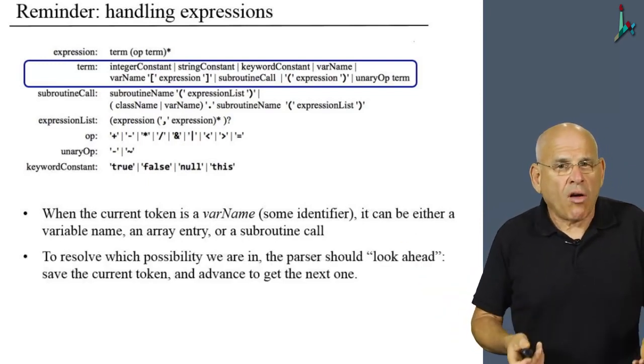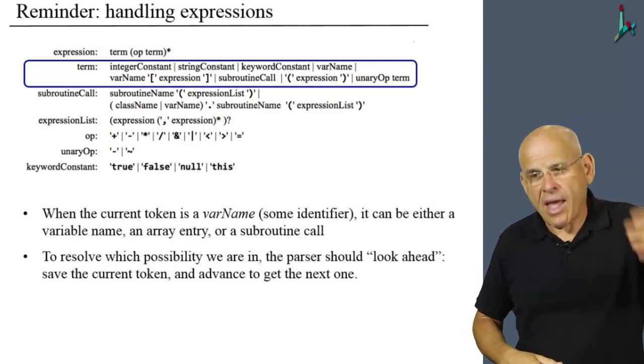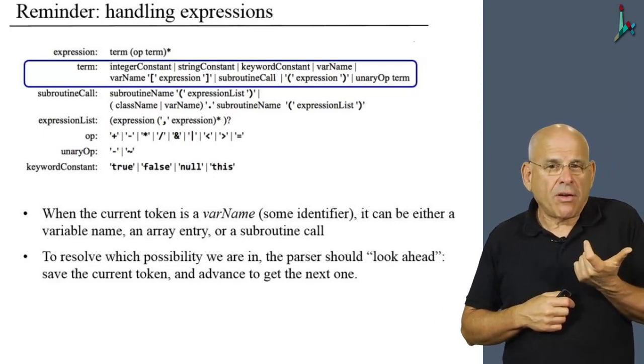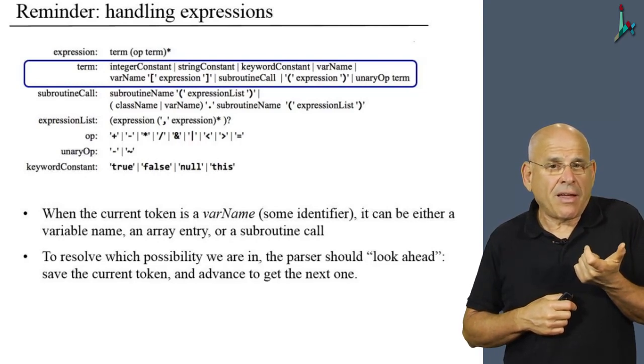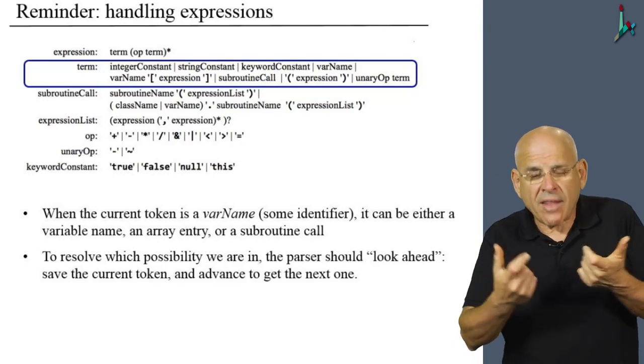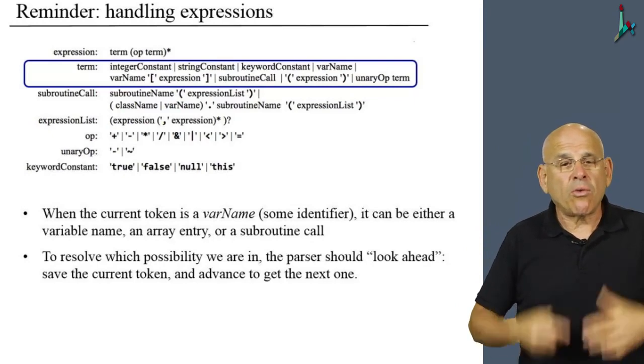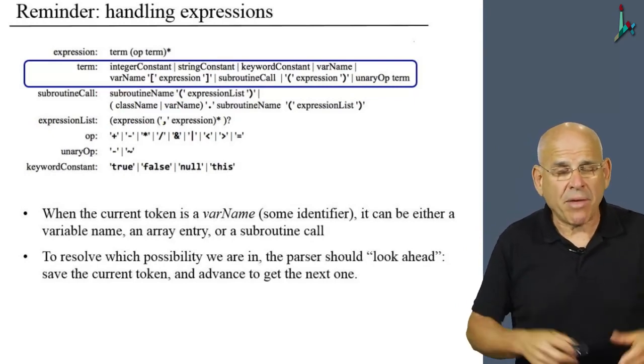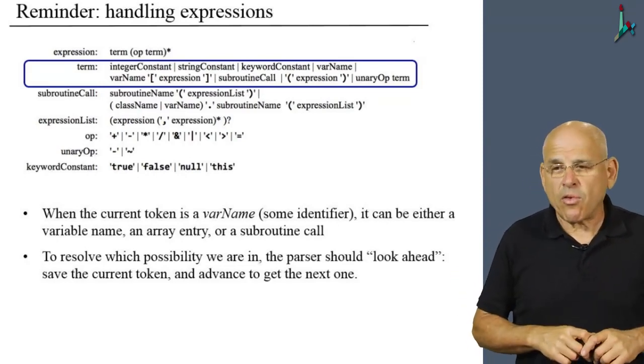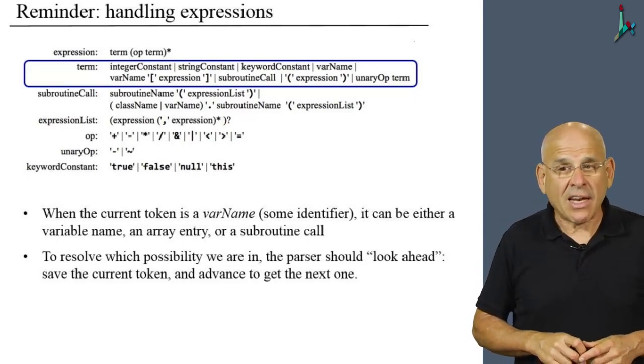So the only way to resolve which possibility we're in is to look ahead into the next token. We have to save the current token, because we haven't yet used it for code generation. We have to look ahead for the next token, and then once we have these two tokens in hand, we have all the information that we need in order to resolve how to handle it and which XML to generate from it. So that's a detail that you have to worry about when you develop the full-scale version of your syntax analyzer.